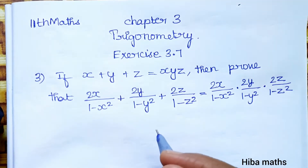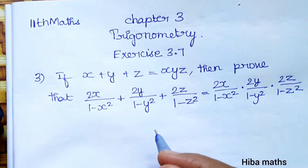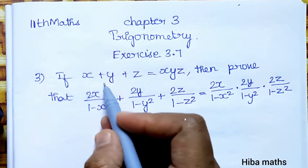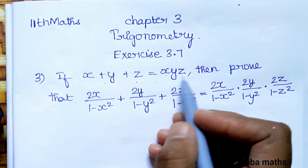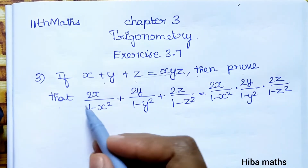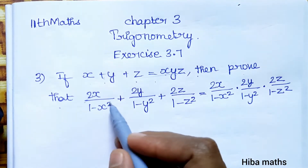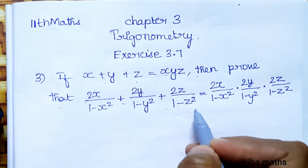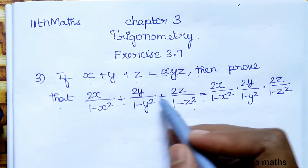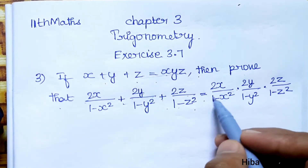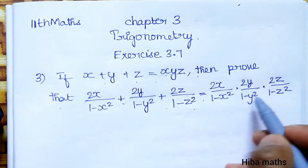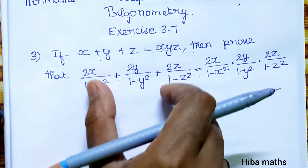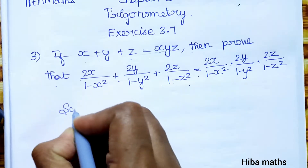Hello students, welcome to 11th standard, Chapter 3 Trigonometry, Exercise 3.7, third question. If x plus y plus z is equal to xyz, then prove that 2x by (1 minus x square) plus 2y by (1 minus y square) plus 2z by (1 minus z square) is equal to 2x by (1 minus x square) into 2y by (1 minus y square) into 2z by (1 minus z square). First, under this condition, we will solve the problem.